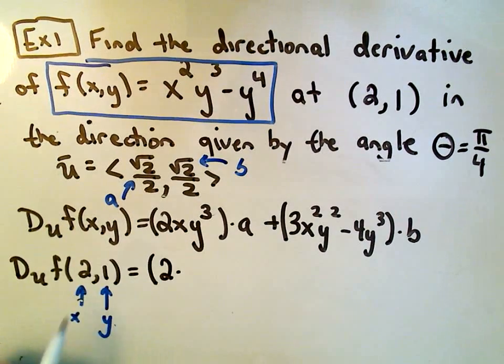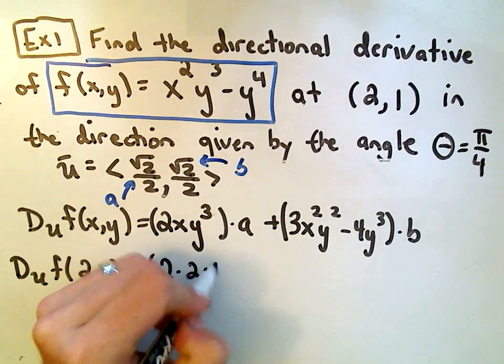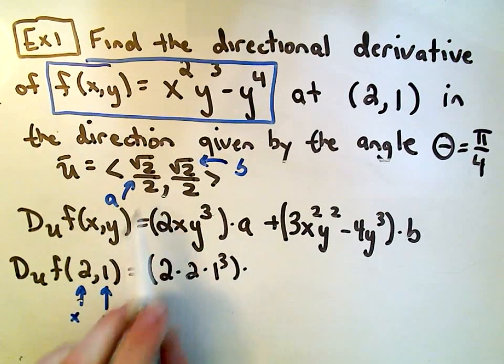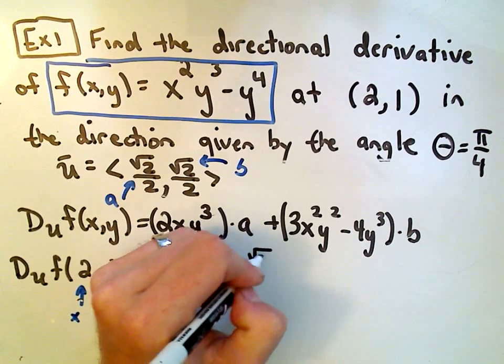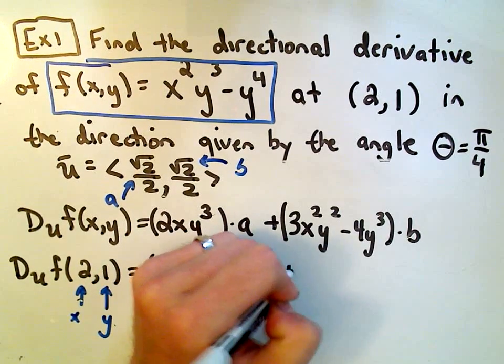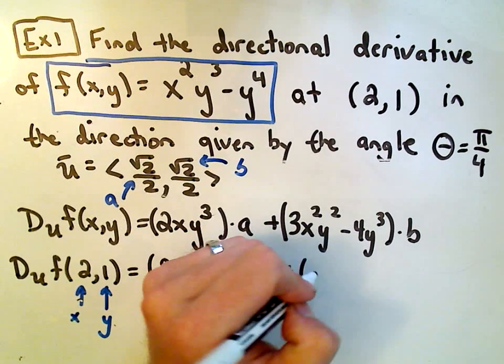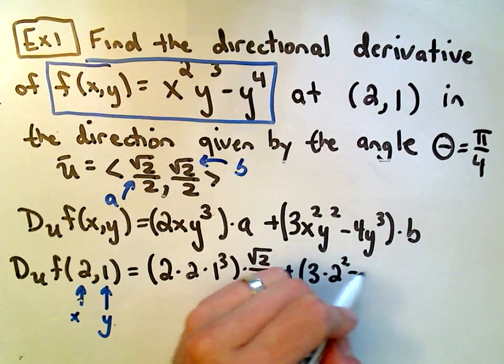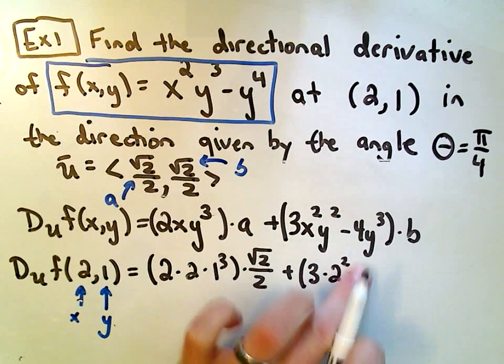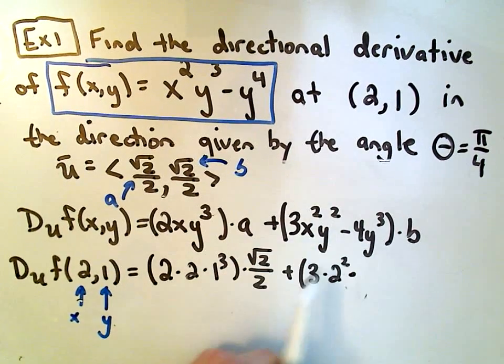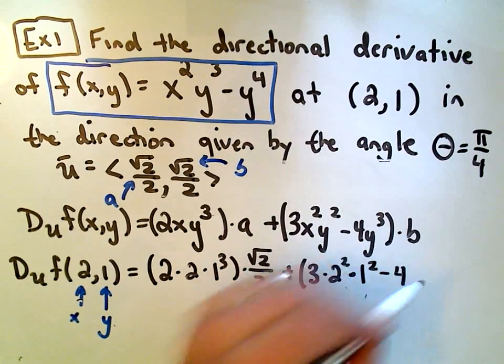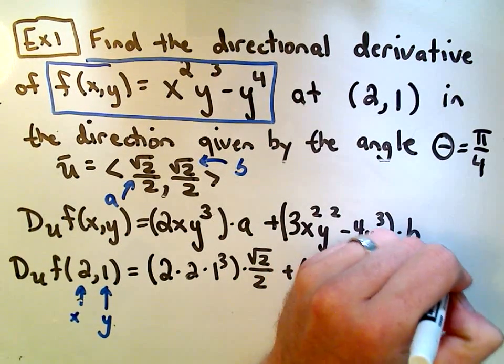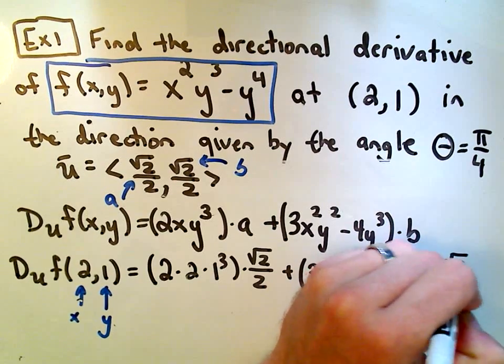So we'll get 2, x is 2, y which is 1 to the third power. We have to multiply that by the component a, which is √2/2. Plus, now we just have to do the same thing. So we'll get 3 times x, which is 2 squared, plug in y we simply get 1² - 4 times 1³. And we have to multiply all of that by √2/2.